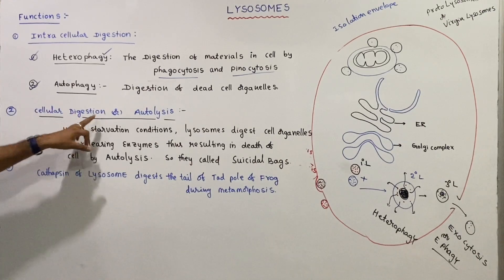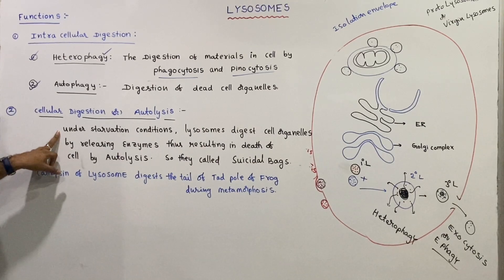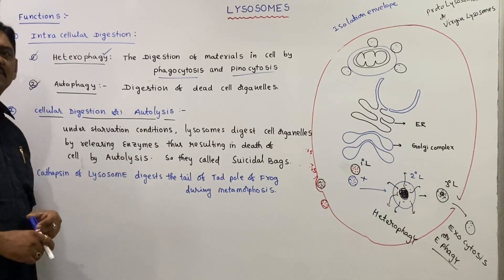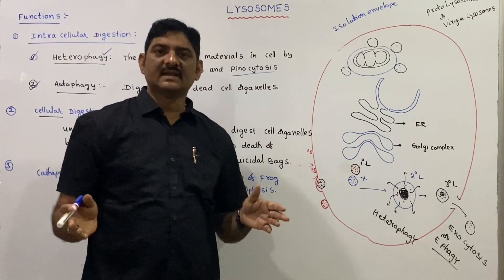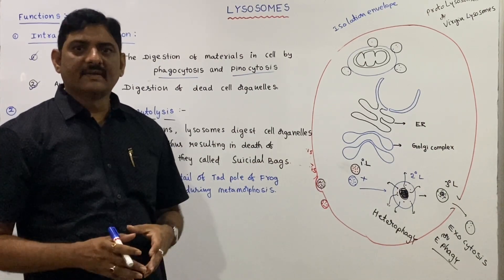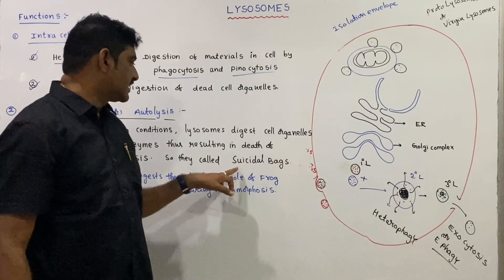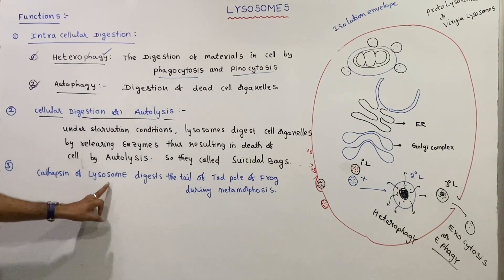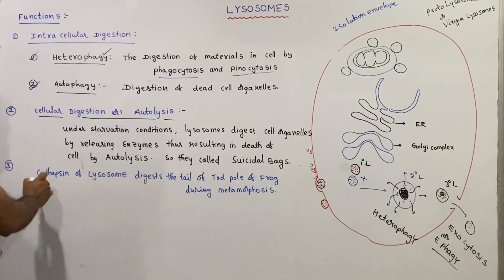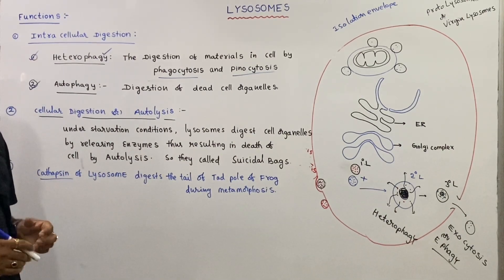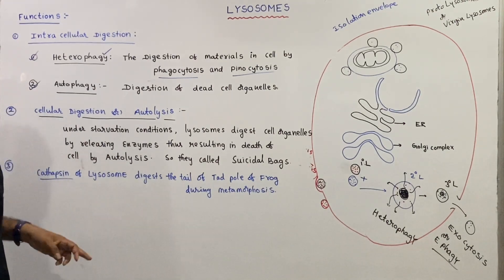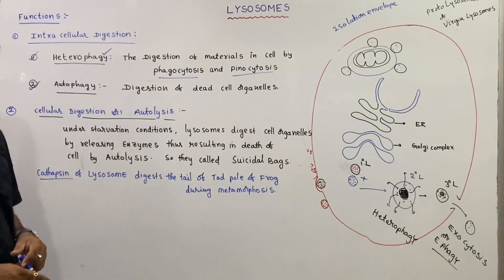Under starvation conditions, lysosomes digest the cell organelles by releasing their enzymes, resulting in the death of the cell — this process is called autolysis. Therefore lysosomes are called suicidal bags of the cell. Additionally, cathepsin from lysosomes digests the tail of the tadpole during frog metamorphosis.